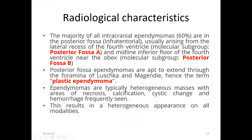Regarding radiological characteristics, the majority of intracranial ependymomas (60%) occur in the posterior fossa, usually arising from the lateral recess of the fourth ventricle — the foramen of Luschka, representing posterior fossa group A tumors — or from the midline near the obex, representing posterior fossa group B tumors. Posterior fossa ependymomas extend through the foramina of Luschka and Magendie; this is called plastic ependymoma. You can see varieties of necrosis, calcification, cystic changes, and hemorrhage, giving a heterogeneous appearance.